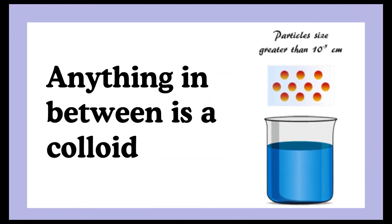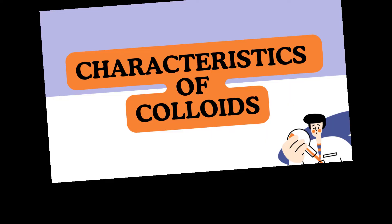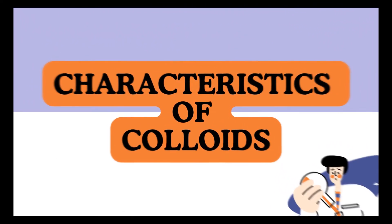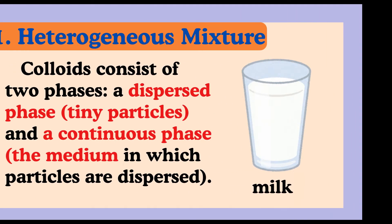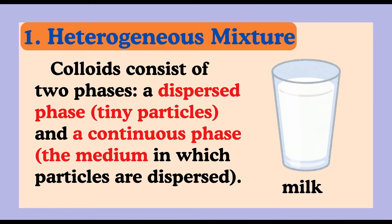Anything in between is a colloid. One: heterogeneous mixture. Colloids consist of two phases: a dispersed phase of tiny particles, and a continuous phase — the medium in which particles are dispersed. Despite this, colloids appear homogeneous to the naked eye. Example: milk is a colloid consisting of fat droplets dispersed in water, but it looks uniform to the naked eye.